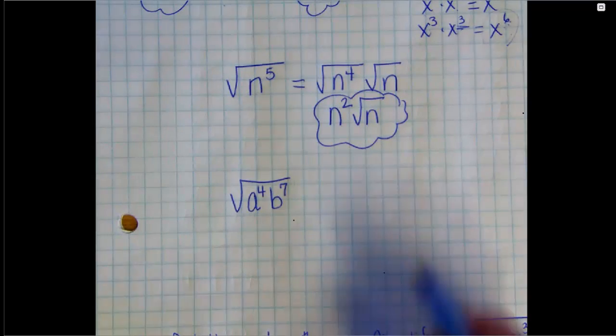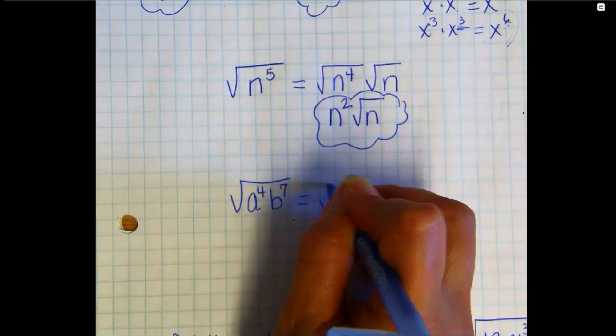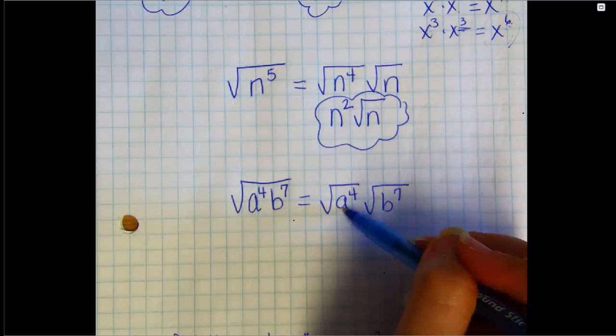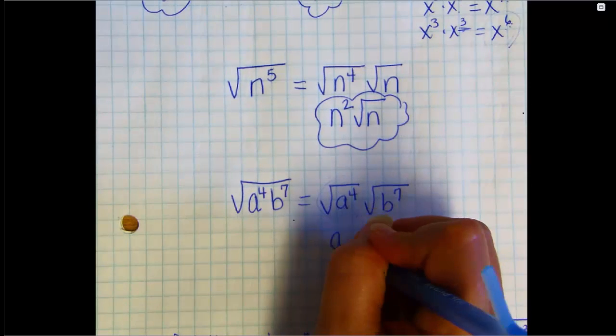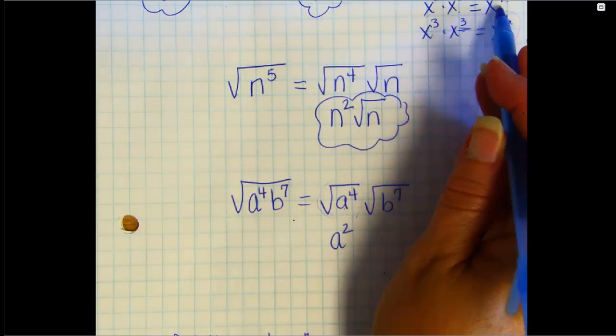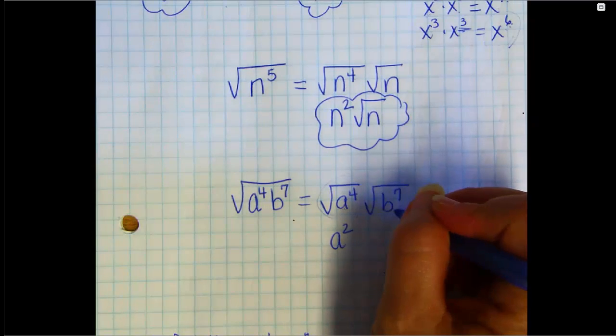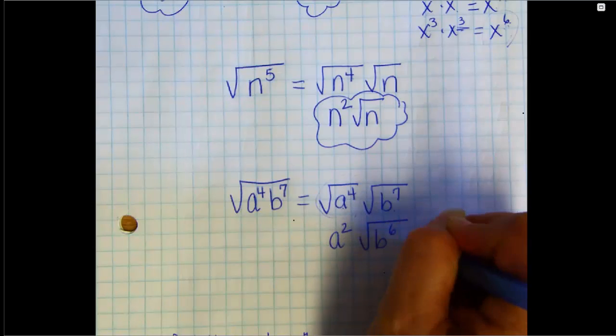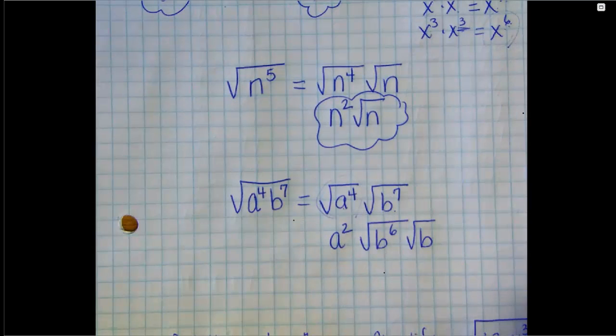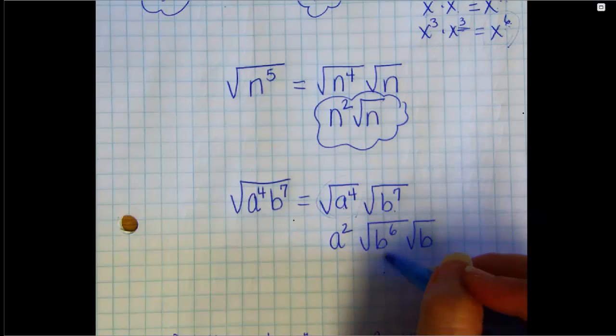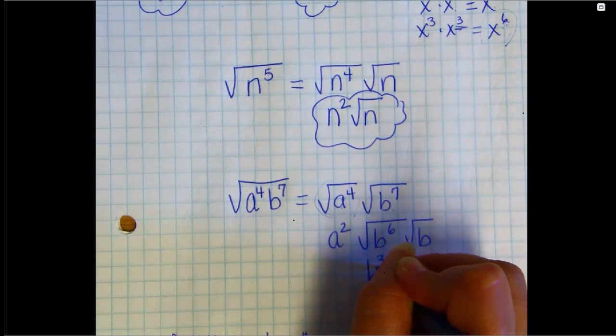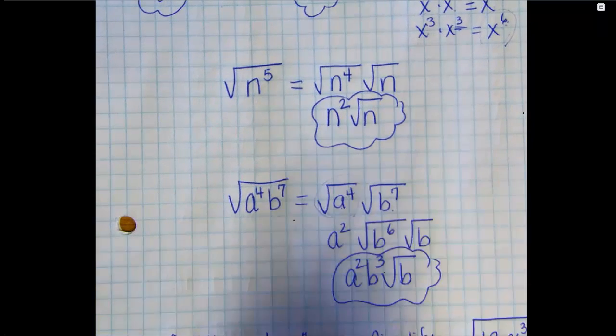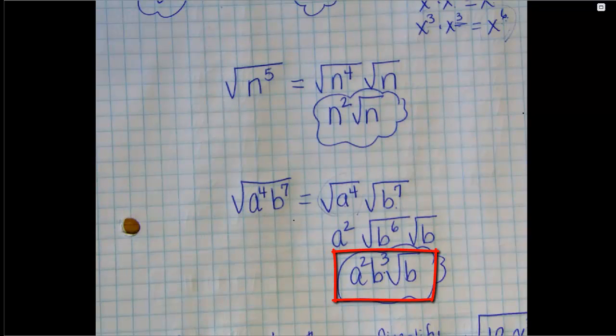Sometimes you'll have more than one variable, just break them up. This is like having the square root of A to the fourth times the square root of B to the seventh. The square root of A to the fourth, that's perfect, that's A squared. Something squared times itself gives you that number to the fourth. The square root of B to the seventh, that's odd, so you want to break that down. So the next number down, B to the sixth, times the one left over B. The square root of B to the sixth, 6 divided by 2 is 3, is B cubed. Bring your A squared down, leave your lone B under the radical. And then, of course, you can put them all together.